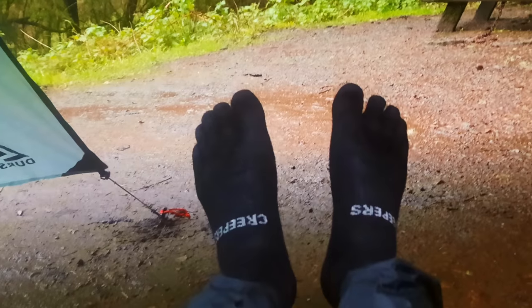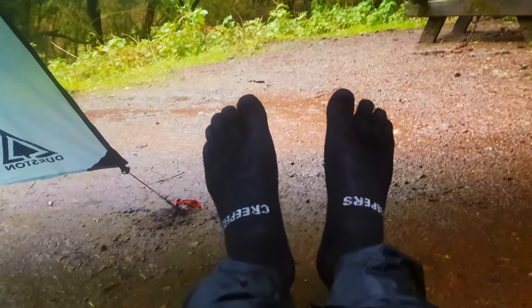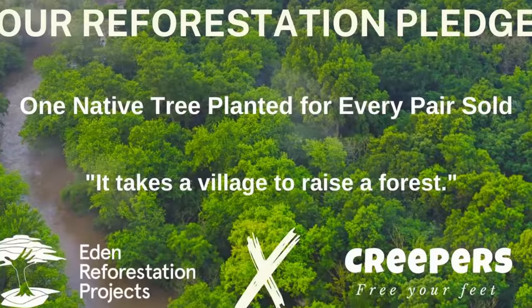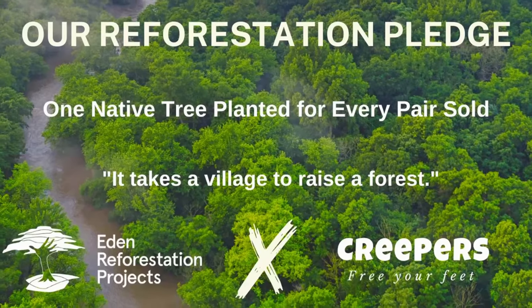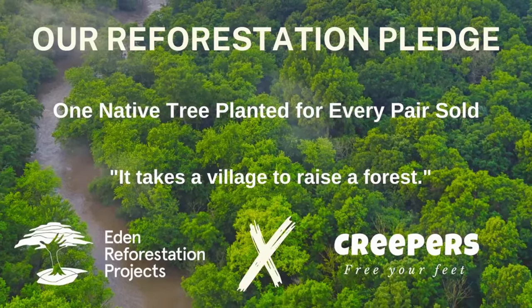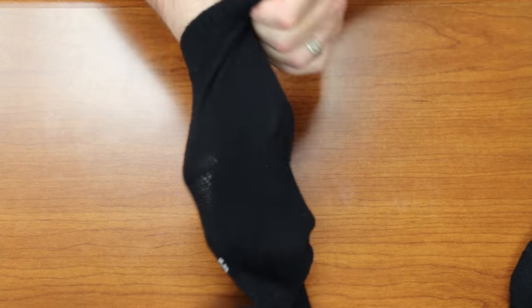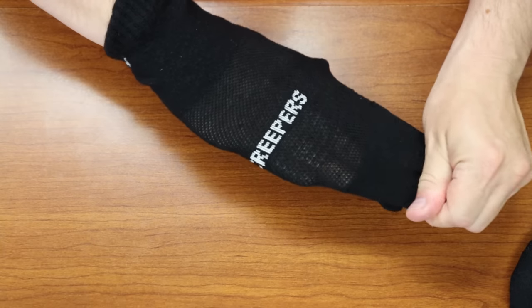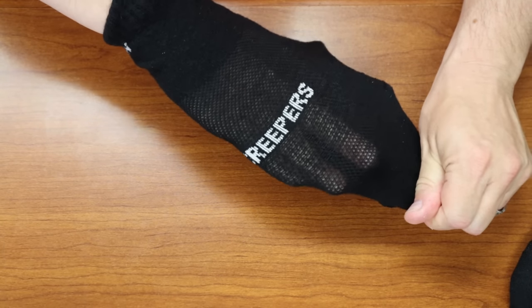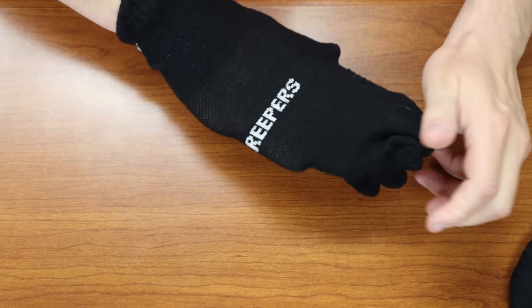The sock is made of 50% responsible merino wool, and they add acrylic for softness. Furthermore, Creeper will plant a native tree for every pair sold through their work with the Eden reforestation projects. I have found the Creeper socks to be just as good as Injinji as far as the way they work. I do, however, appreciate the greater breathability and softness of the Creepers, and hey, if it gets a tree planted, why not?